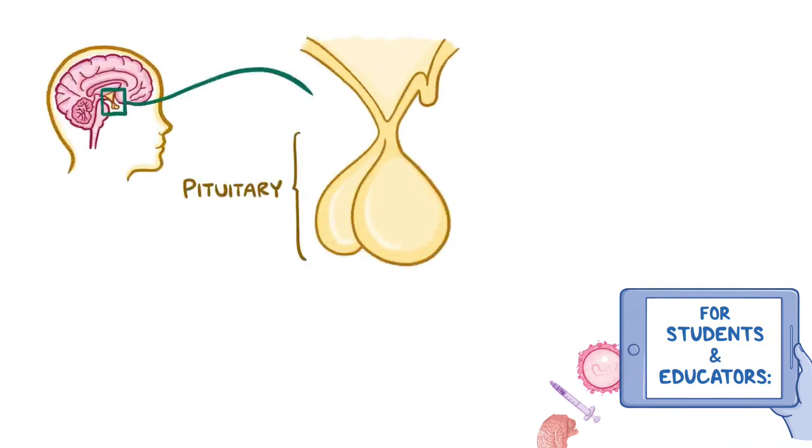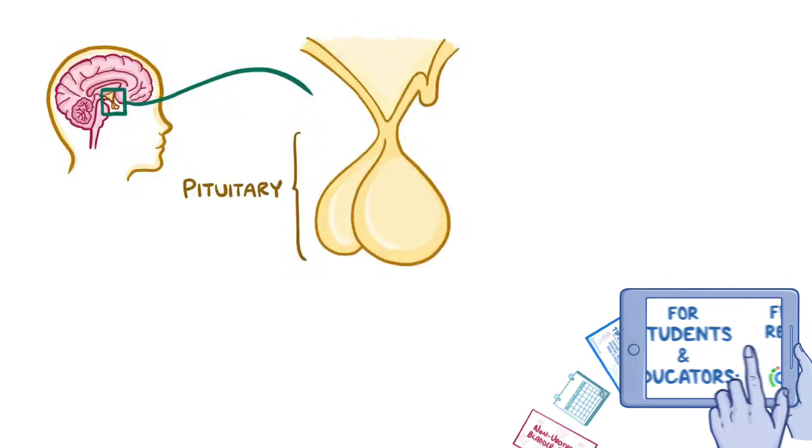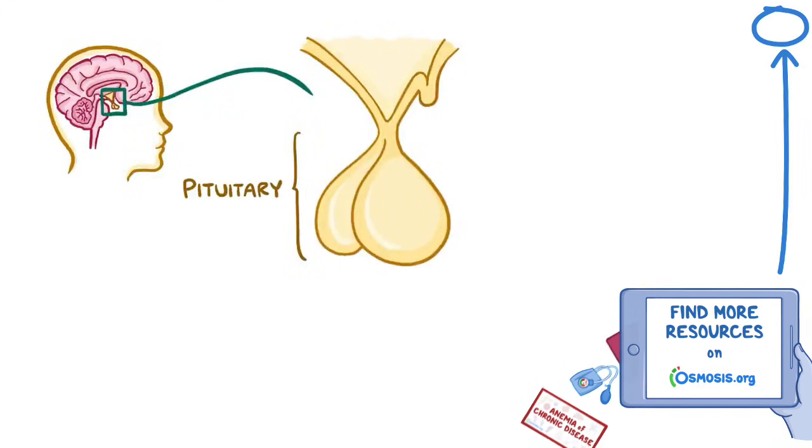Normally, the pituitary is a pea-sized gland hanging by a stalk from the base of the brain. It sits just behind the eyes, near something called the optic chiasm, which is where the optic nerves cross.